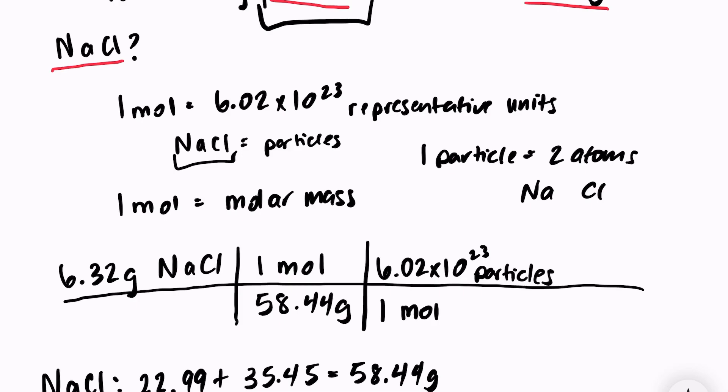So I know that in my one particle that I have, I have two atoms in that sample. And let's double check that all of our units cancel out and that we're left with what we need.